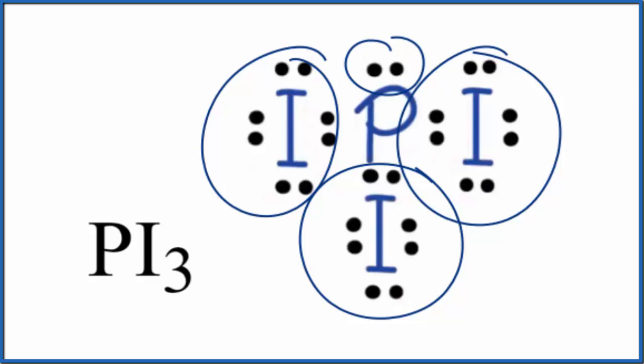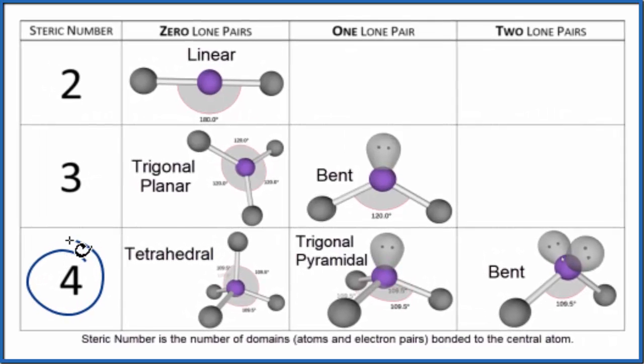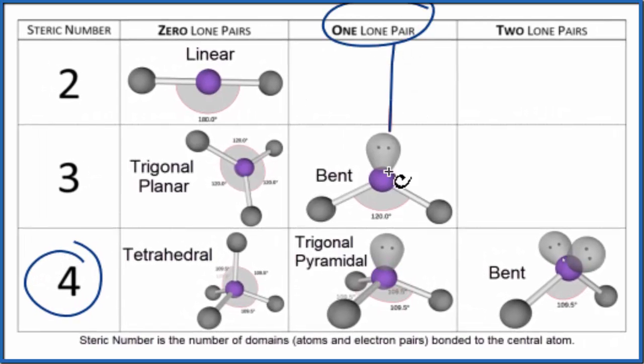One of them is a lone pair. So we look at this chart here, we have a steric number of four, and one of those things is a lone pair. So we come down and over, and there's that trigonal pyramidal we were talking about.